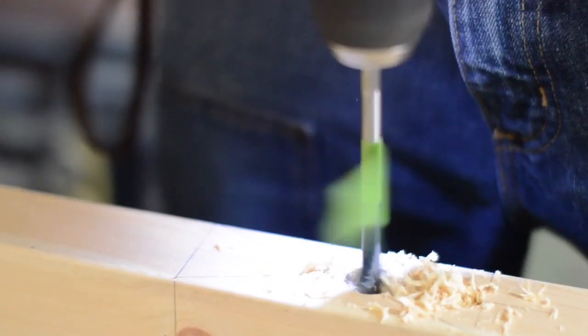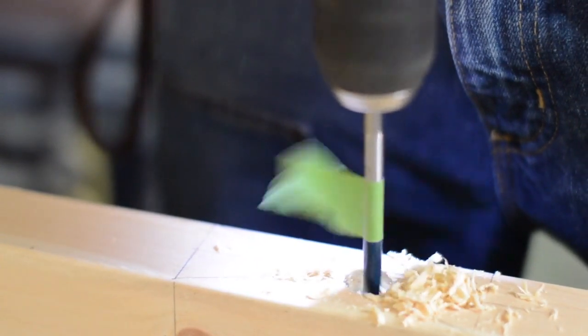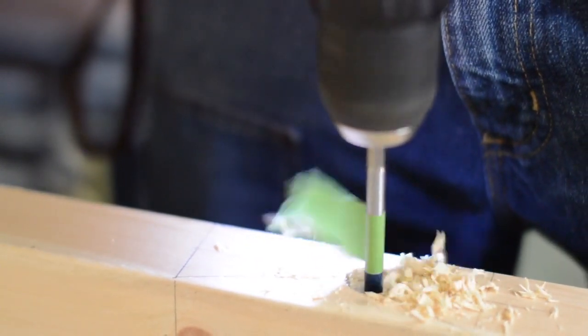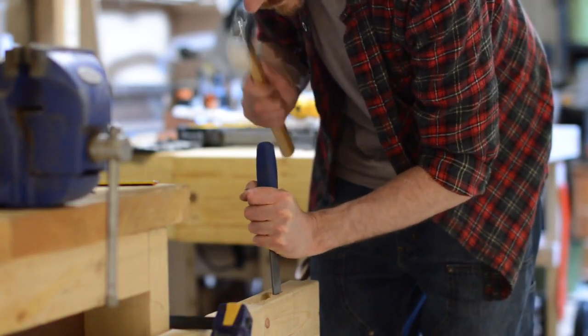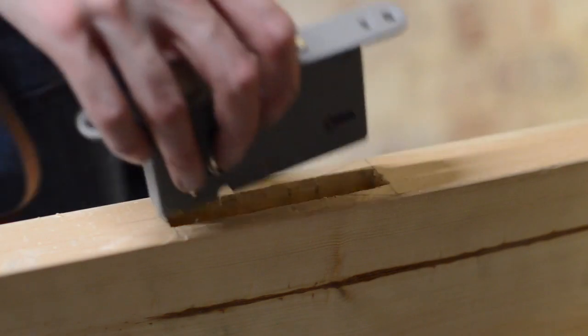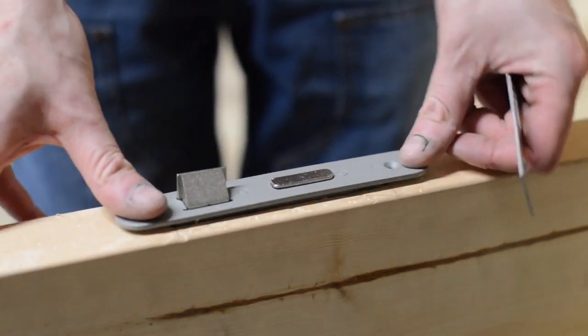I fitted a mortise lock to the door. So called because you have to cut a mortise for it to fit into. I marked a depth stop on the drill bit and then drilled a series of holes. I could then square up the corners and tidy it up with a chisel and then it slips in place.